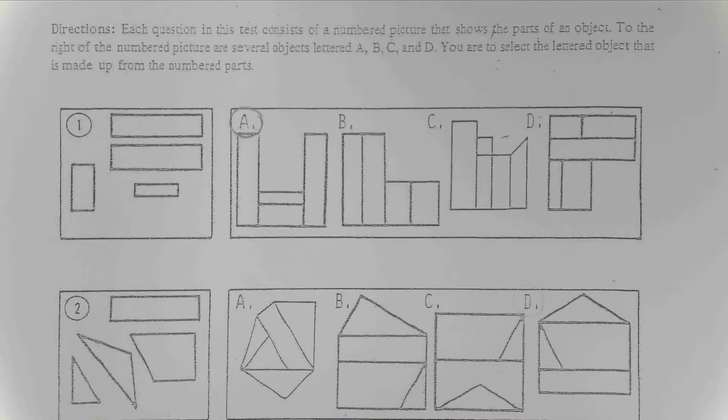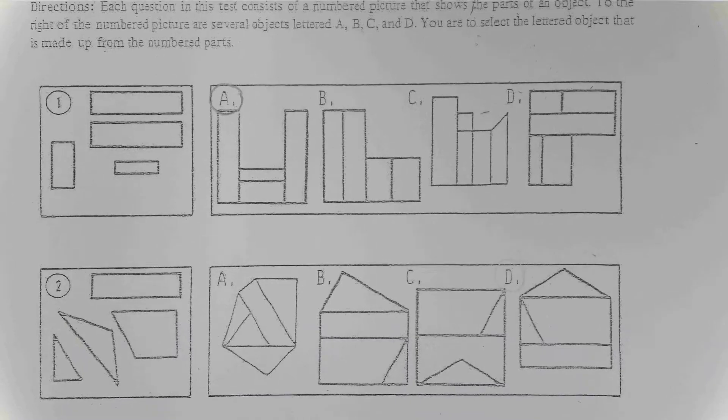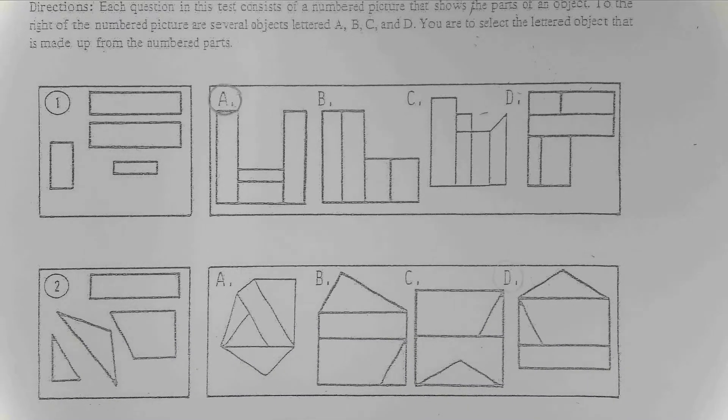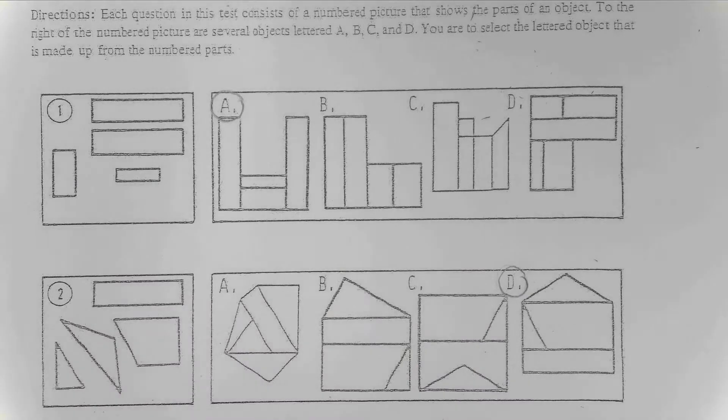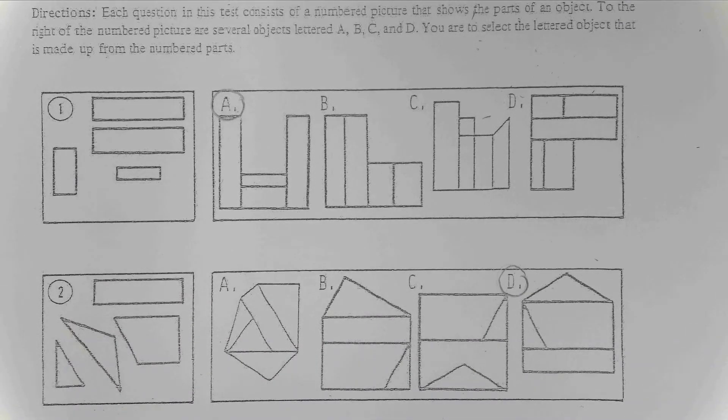Moving on up to number two here. Once again, we have the pieces on the left. We'll end up being an object on the right and you can see that that's going to be letter D. Now, you might be thinking, well, how is it not B? Notice the shape of the triangle. They're different.